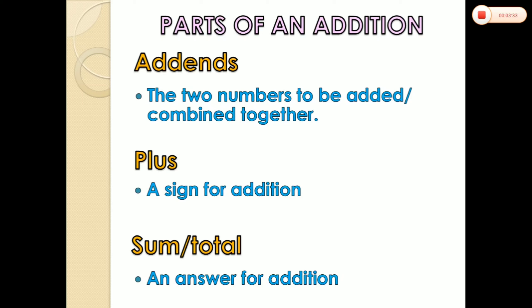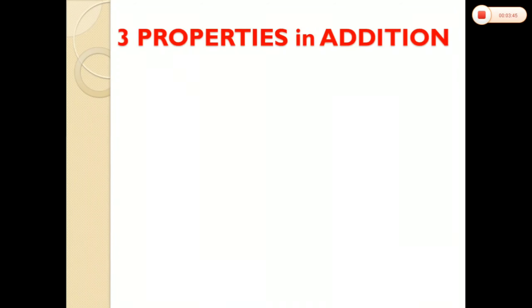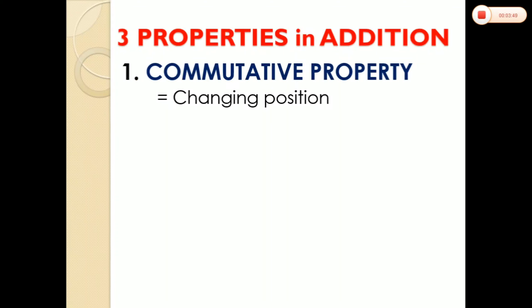Now, addition has its own properties. So let's talk about the properties of addition. We have three properties in addition. The first one is what we call commutative property. Commutative property means changing position.